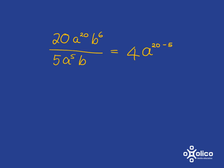And then we're going to look at the b's. We've got b to the 6 over b. So that is going to be, and remember b is just b to the 1, right? So it's b to the 6 minus 1. And so what we'll get here is 4a to the 15b to the 5.